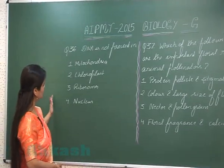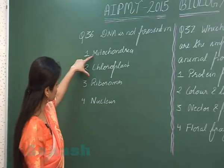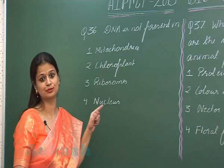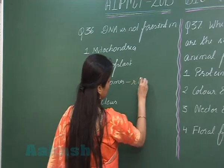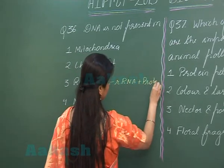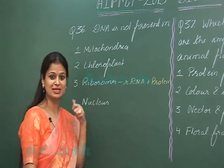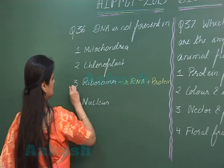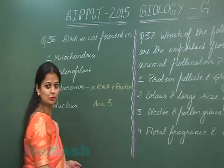Question number 36: DNA is not present in which of the following? In mitochondria, chloroplast, and nucleus there is presence of DNA. In ribosomes there is presence of ribosomal RNA and protein, not DNA. So in ribosomes instead of DNA there is RNA, making this the right option. The answer for this question is option number 3.